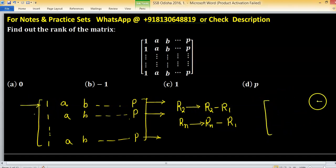So we have a matrix like 1, a, b, and so on, p, and other entries are 0.